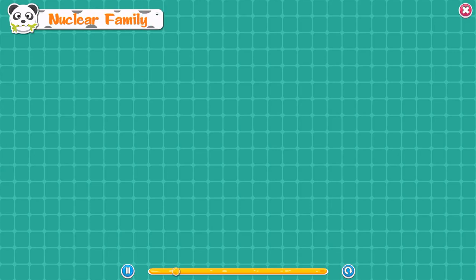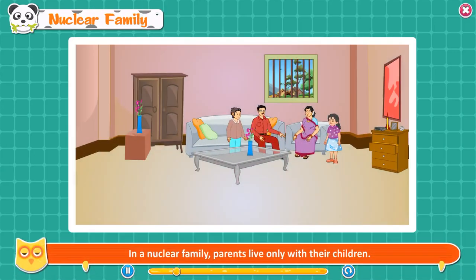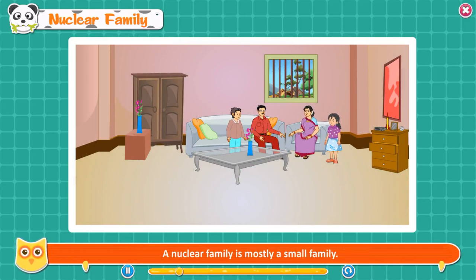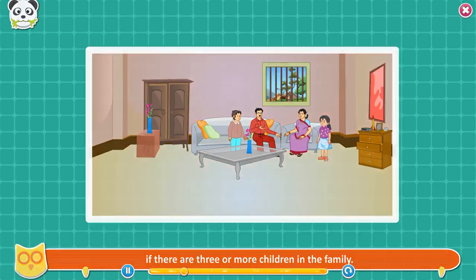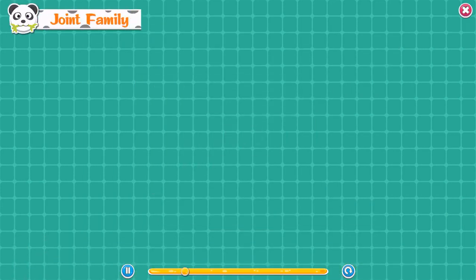Nuclear family. In a nuclear family, parents live only with their children. A nuclear family is mostly a small family. However, a nuclear family becomes a big family if there are three or more children.